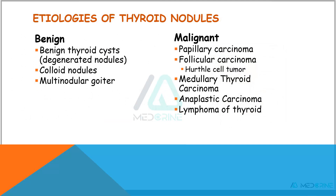What are the causes of thyroid nodules? The causes of thyroid nodules can be either benign or malignant. For benign causes, we have benign thyroid cysts, colloid nodules, and multinodular goiter. For malignant cases, we have papillary carcinomas, follicular carcinoma including Hürthle cell tumors, medullary thyroid carcinomas, and anaplastic carcinoma and lymphoma of the thyroid.